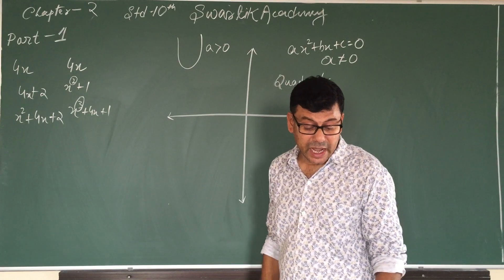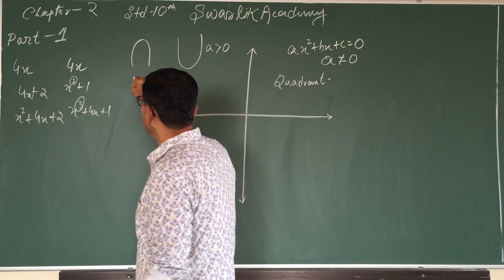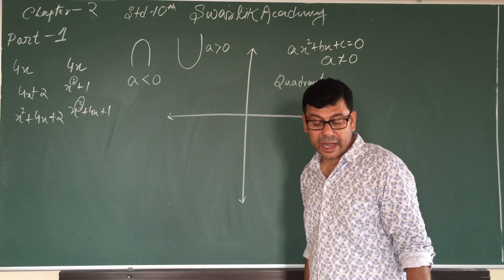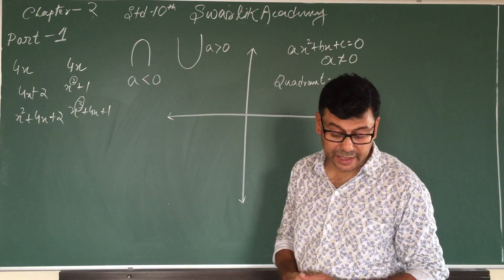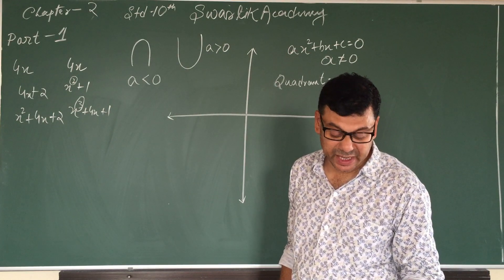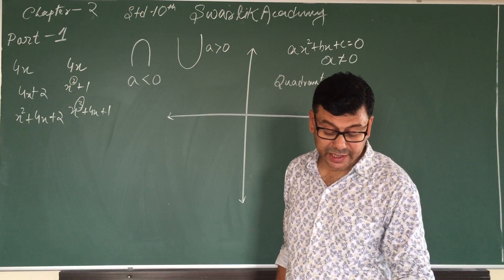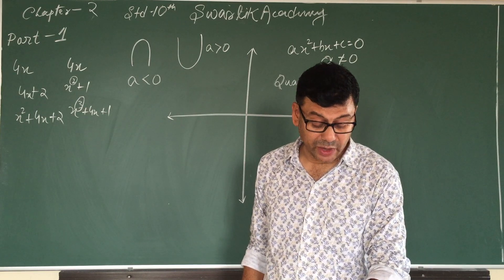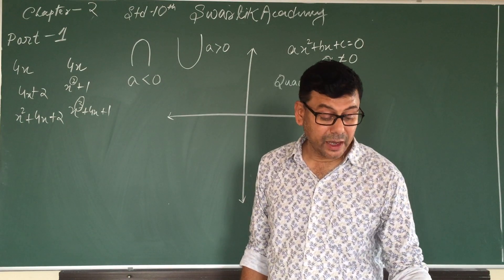You have to remember: if the parabola is opening downward, then a will be less than zero. These two things we must remember. Also, the zeros of the quadratic polynomial ax² + bx + c, where a ≠ 0, are precisely the x-coordinates where the parabola representing y = ax² + bx + c intersects the x-axis.